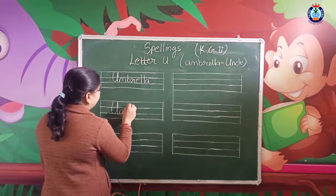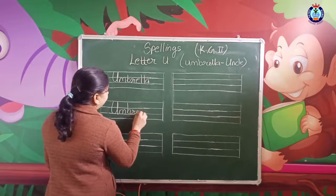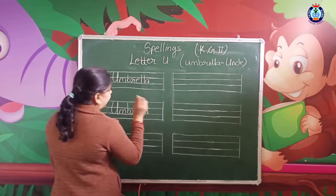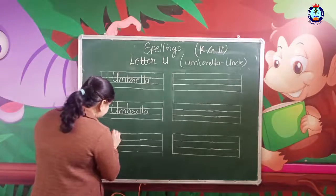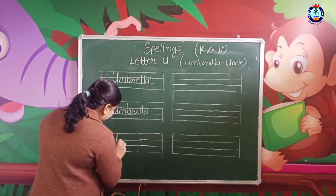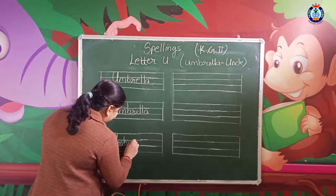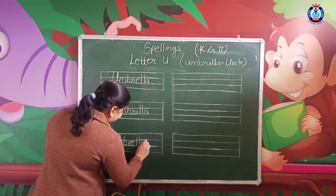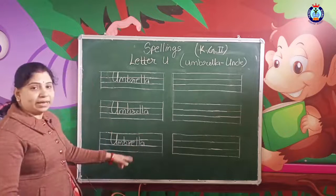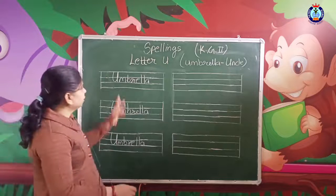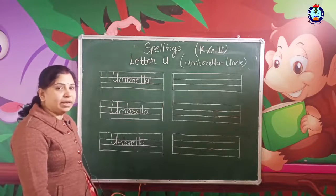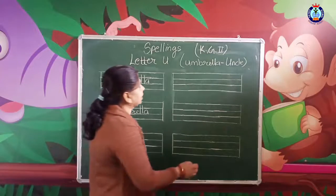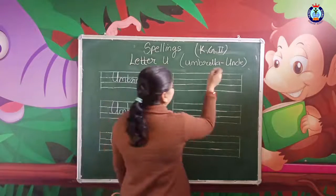U-M-B-R-E-L-L-A, umbrella. What is the spelling of umbrella? U-M-B-R-E-L-L-E. Umbrella. Now the second spelling is uncle.